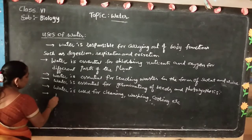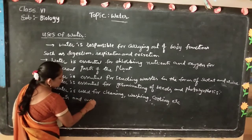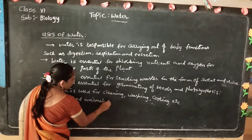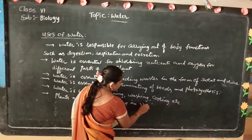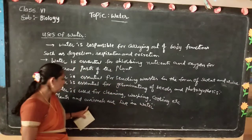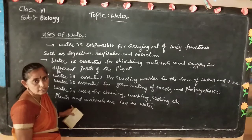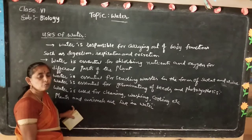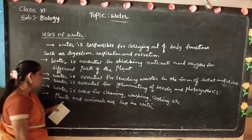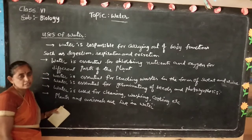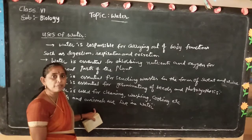Plants and animals are also habited in water — they live in water. For example, plants like Hydrilla, Pistia, and Lotus completely live in water. Without water these plants will die. Their habitat is water, and they are known as aquatic plants. Some animals also permanently live in water, for example fish, whales, dolphins. These are completely living in water and they are known as aquatic animals.